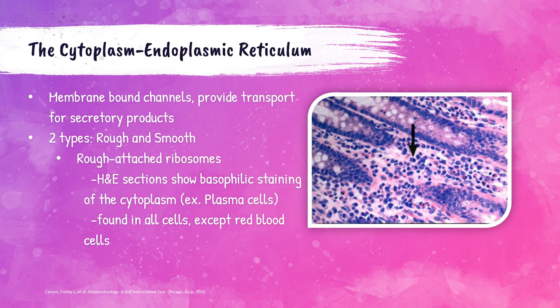The endoplasmic reticulum is a series of membrane-bound channels that provide transport for secretory products within the cell. There are two types: rough and smooth. The rough endoplasmic reticulum has ribosomes attached to it. H&E stained sections show a basophilic color — that dark blue-purple — in the cytoplasm of these cells. An example is plasma cells, as all cells except mature red blood cells have some rough endoplasmic reticulum. The photo shown here shows the basophilic color in the cytoplasm of plasma cells.